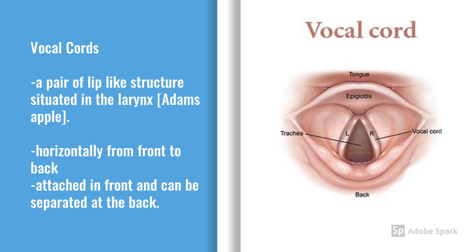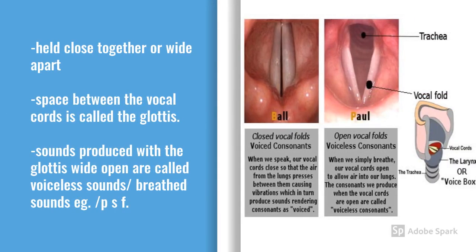The vocal cords can be held close together or wide apart. The space between the vocal cords is called the glottis. In the production of certain speech sounds, the vocal cords are wide apart, the glottis is open, and the air passes out freely without any friction. The sounds produced with the glottis wide open are called voiceless sounds. Example: P.